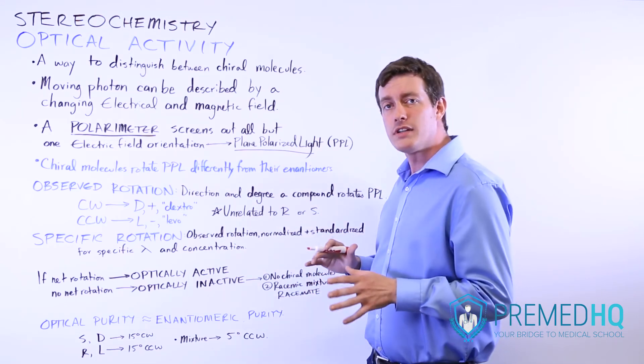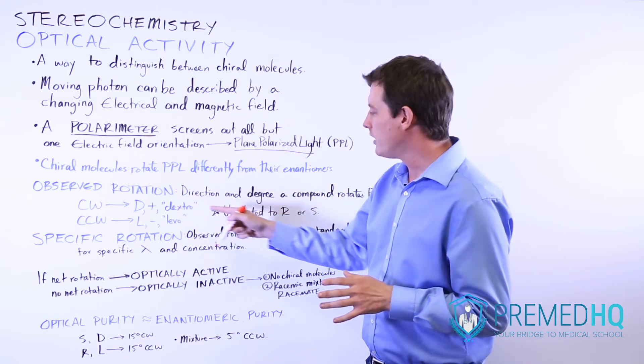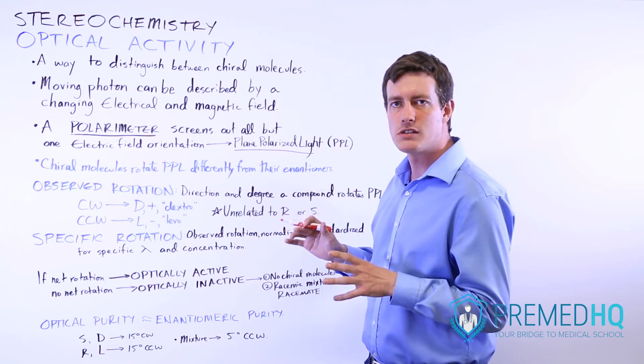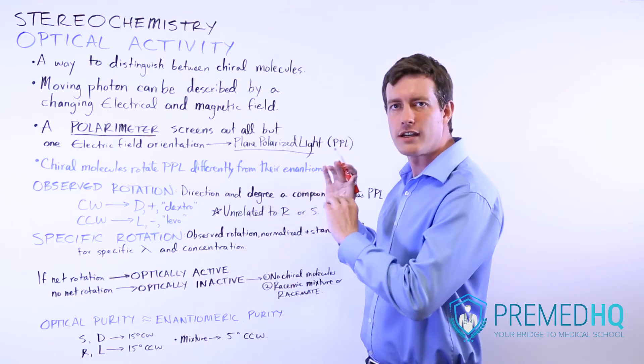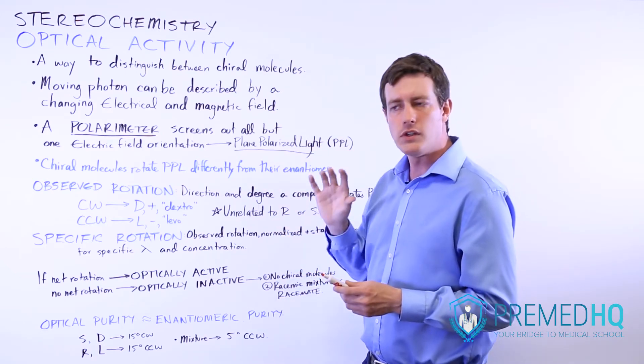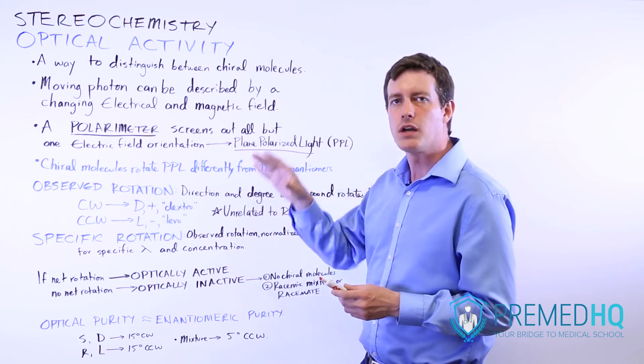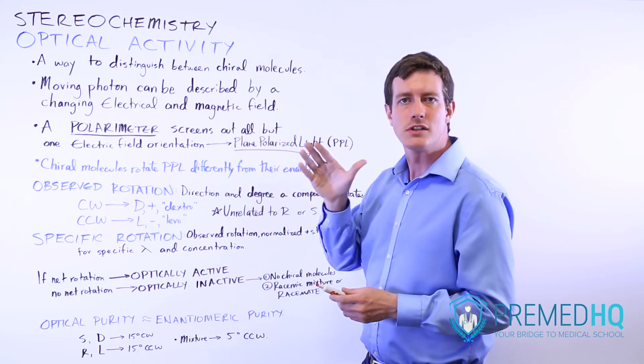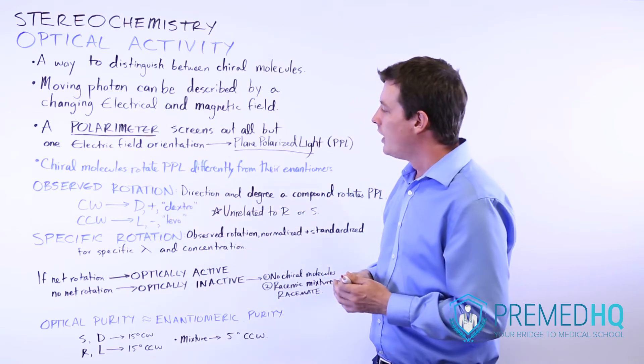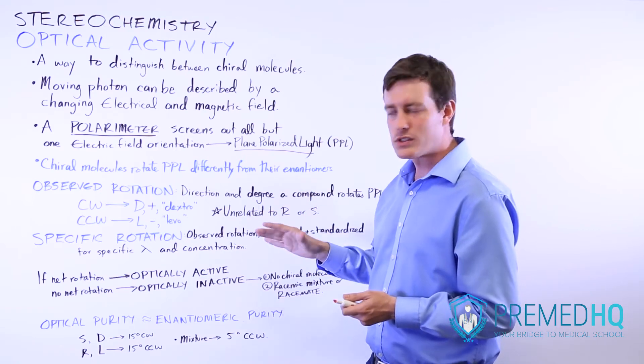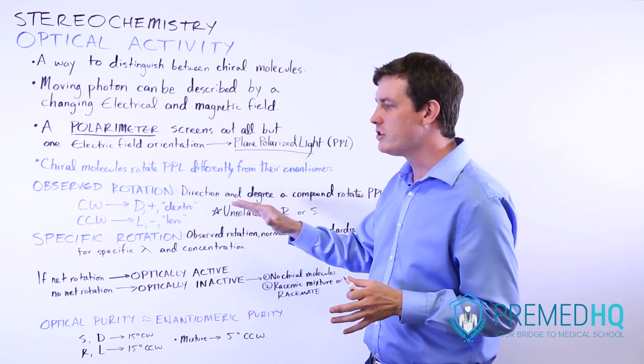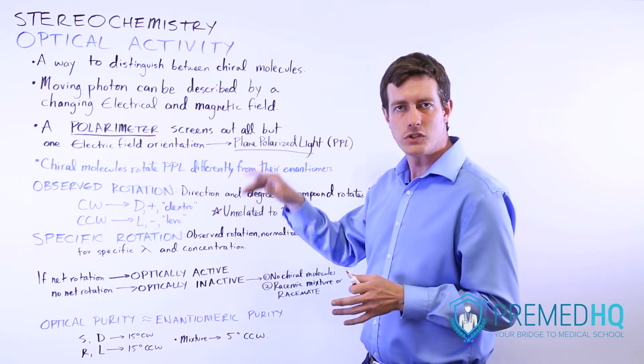One thing to be very aware of is that D and L are unrelated to R and S. Even though R and S, the absolute configurations, also refer to clockwise for R and counterclockwise for S, that is a man-made way that we've used to classify things based upon priorities that we assign to the different substituents. D and L, or dextro and levorotatory, are experimentally determined values, and they're not related directly to our absolute configuration and how we choose to name molecules as R or S.